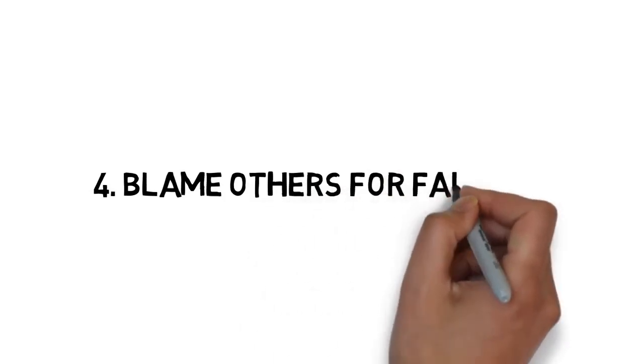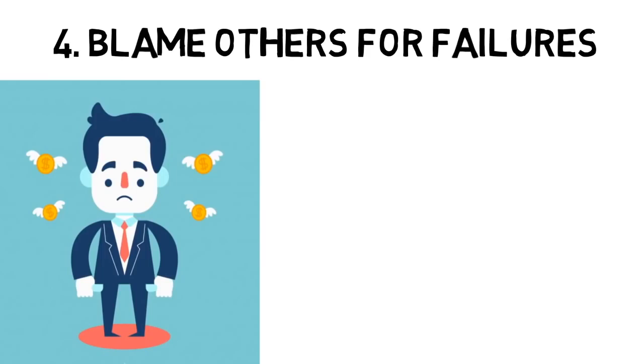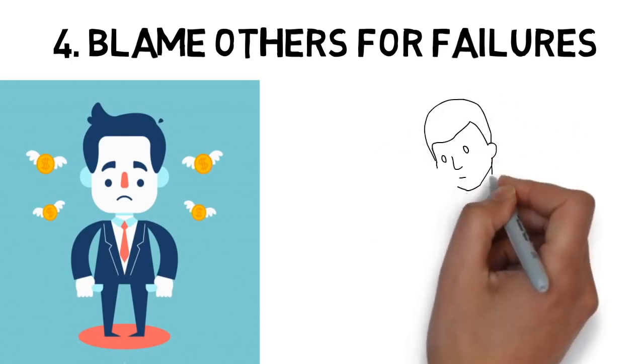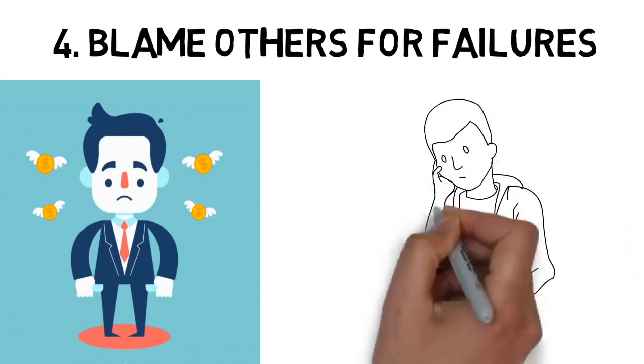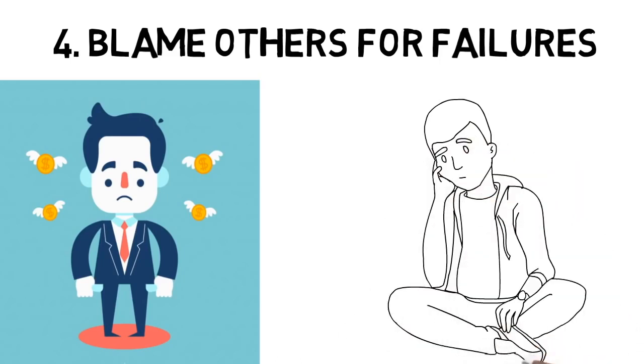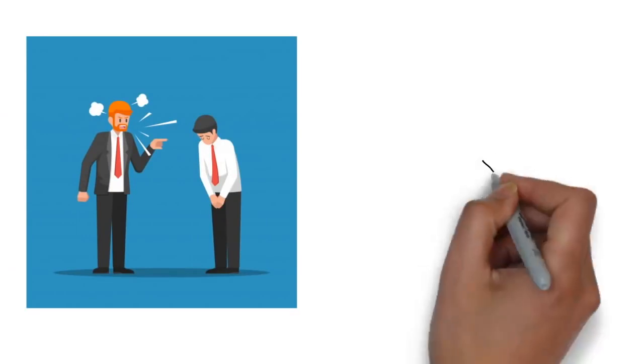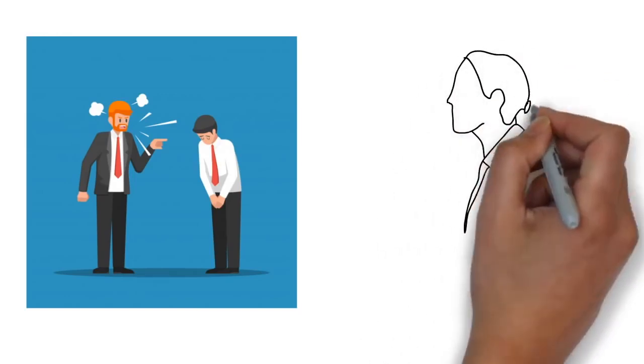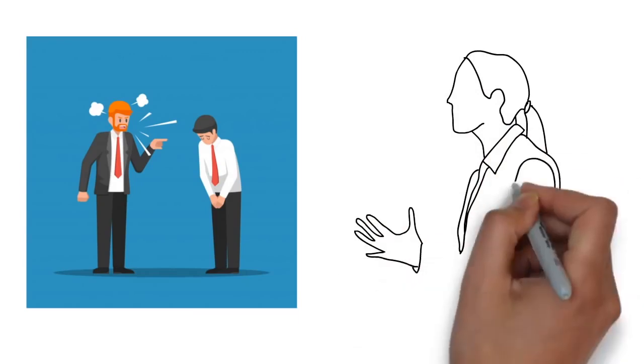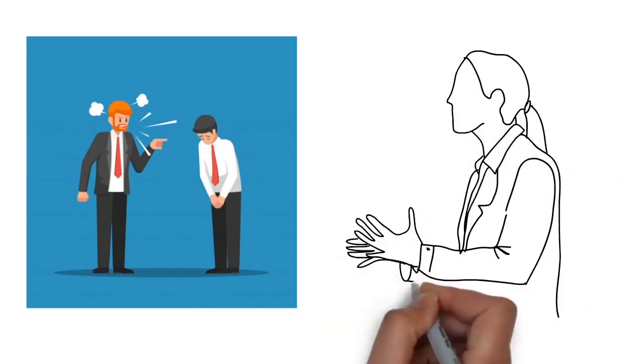4. Blame others for failures. Everyone fails at some point in his or her life. Whether it's at work, in school, or at home, failure is unavoidable no matter how much money you make or what kind of car you drive. But there is a dramatic difference in the way rich and poor people understand and handle those failures. Many poor people make a habit of blaming other people when something doesn't go their way. If they didn't get that raise at work, it's because their boss is an idiot or the system is biased. While this is certainly sometimes the case, this mindset makes it impossible to learn from your failures because you're constantly reassuring yourself that you did nothing wrong.